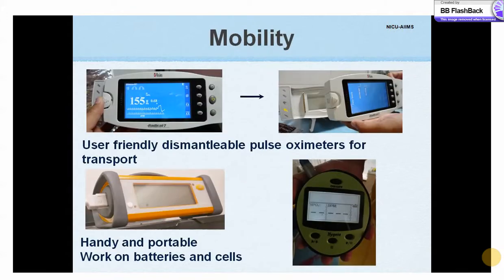The display panel can be dismantled from the unit after charging the battery for ease of transportation in some models. We also have handy portable pulse oximeters that work on batteries and cells, making them ideal for transport. Some pulse oximeters have rubber frames which provide sturdiness during transport.